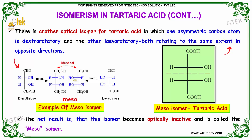In the following example, this meso isomer when reacted with NaBH4 gives D-erythrose and L-erythrose.